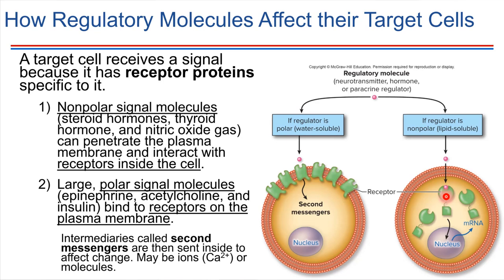Once the signal binds to the receptor, there is usually a cascade of events that happens internally inside the cell — some sort of signaling cascade that ends up modifying gene expression in the nucleus. In the case of a signal molecule that binds a receptor in the plasma membrane, those receptors are fixed in place, so a second messenger is often involved. The receptor protein activates a second messenger, which then goes and influences something inside the cell, such as gene expression or some other process.